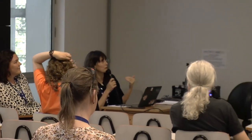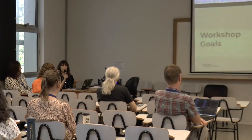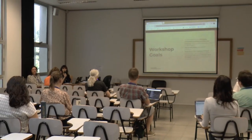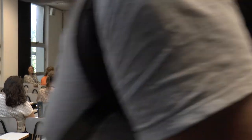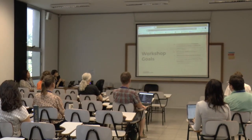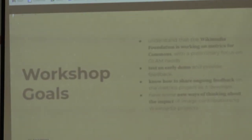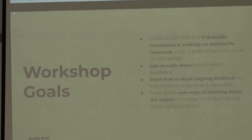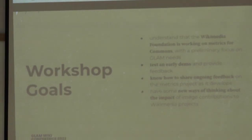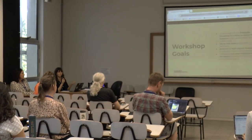What we're trying to accomplish in this session: we want you all to understand that the Wikimedia Foundation is working on metrics for Commons, and that we're starting this work with a primary focus on GLAM needs — it's a nicely bounded use case for figuring out how to work with Commons data and accurately produce metrics. Our goal is also for you to test a very early demo, and we want you to walk away knowing how to continue to provide feedback. This is an ongoing conversation process and this is the very first step of it.